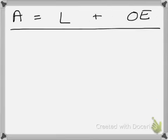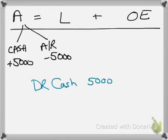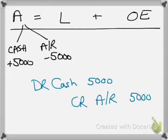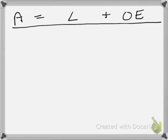Next, we collected five thousand dollars on account — collecting from our accounts receivable customers — so the accounts receivable balance is going to go down by five thousand and our cash balance is going to go up by five thousand. Therefore, debit cash for five thousand and credit accounts receivable five thousand.